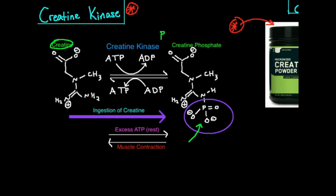Sometimes this molecule is called phosphocreatine, although sometimes it's called creatine phosphate. Notice that on this nitrogen right here, we've attached a phosphate. That phosphate came from ATP — adenosine triphosphate. When we take that phosphate off, it becomes adenosine diphosphate. In other words, we transferred one phosphate from ATP onto creatine, which makes creatine phosphate and ADP. Creatine kinase is a reversible reaction. I can also take the phosphate from creatine phosphate and put it back on ADP to regenerate ATP, returning back to creatine without the phosphate.